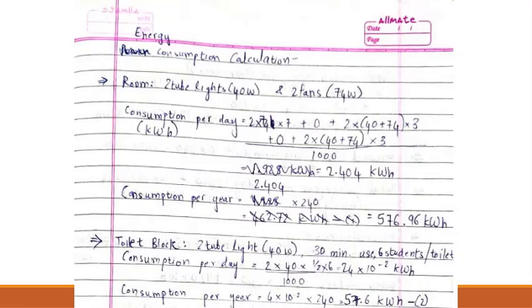For the toilet block, we assume that each student spends 30 minutes per day in the toilet. Since we have two toilet blocks in one wing and 12 students per wing, we effectively have 6 students per toilet. So the consumption per day is given by the following expression, and multiplying it by the number of days per year, we have 57.6 kilowatt hours for the toilet block.